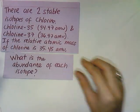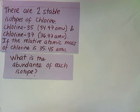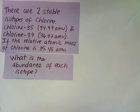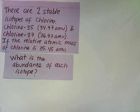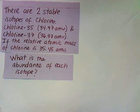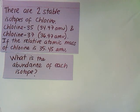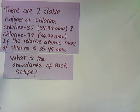We have two stable isotopes of chlorine: chlorine-35 that has a mass of 34.97 AMUs and chlorine-37 with a mass of 36.97 atomic mass units. If the relative atomic mass or the average weight of chlorine is 35.45 AMUs, what is the abundance of each isotope?